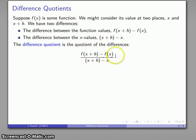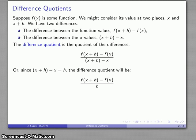So that's the change in our function value over the change in our x values, and that simplifies a little bit since x plus h minus x is just equal to h. We have this simplified form of what our difference quotient is.